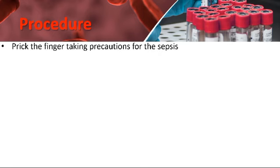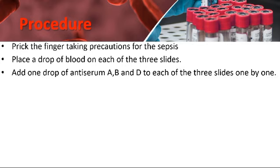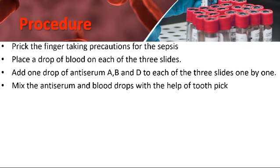Now, what is the procedure of this practical? First, prick the finger, taking precautions for asepsis. Then place a drop of blood on each of the three slides. Add one drop of antiserum A, antiserum B, and antiserum D to each of the three slides one by one. Then mix the antiserum and blood drops with a toothpick, using a fresh stick each time.